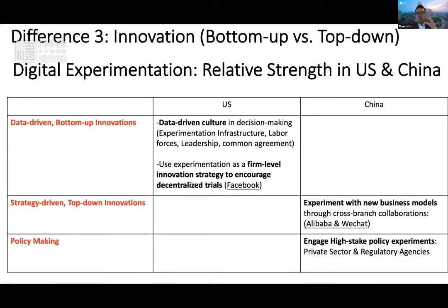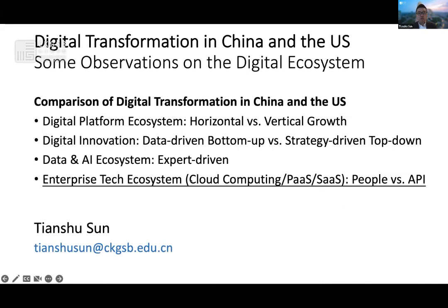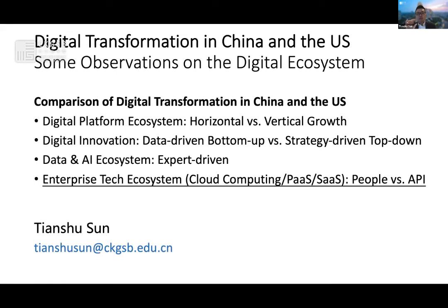From a policy perspective, you also see the Chinese government conducting a lot of policy experiments, both in the private sector and in regulation. The interesting thing is how to combine both — how to combine the strength of both when you enter the market and adapt your data strategy and digital competition strategy. So I would stop here for the interest of time, but I want to summarize the three key differences between the US and China on digital transformation. First is the horizontal versus vertical growth in the digital platform ecosystem. The second is data-driven bottom-up versus strategy-driven top-down in the digital innovation mode. And the final one is the data and AI ecosystem — expert-driven versus application or data-driven.